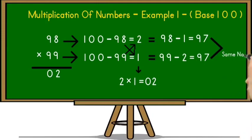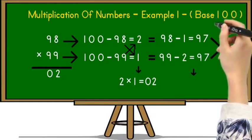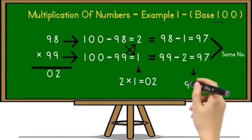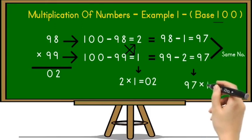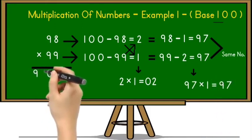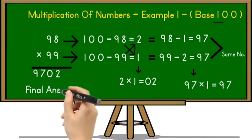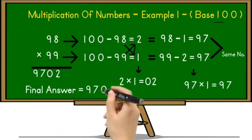Here we got same number 97. So we have to take 97 in the next step and this 97 we have to multiply with 100 plus digit of the base number and base number is 100. So we have to take 1. So 97 multiplied by 1 is equal to 97 and put this 97 before 02. So the final answer is 9702.